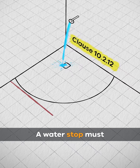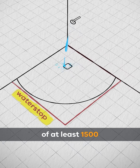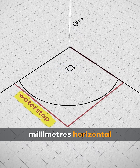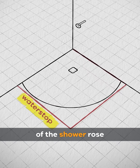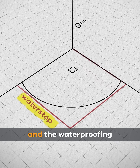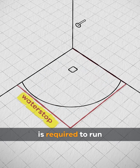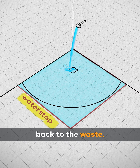A water stop must be placed at a distance of at least 1500mm horizontal radius from the connection of the shower rose of an unenclosed shower, and the waterproofing is required to run from the water stop back to the waste.